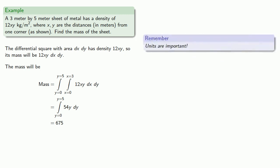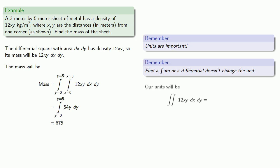Remember, units are important. Finding a sum or a differential doesn't actually change the units. So our double integral, 12xy is given as having units of kilograms per square meter. dx, well x and y are distances in meters, so dx is also a distance in meters. And likewise dy.